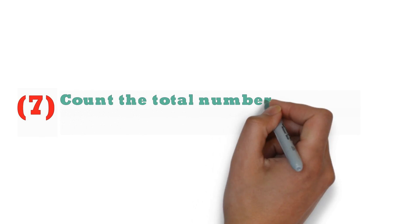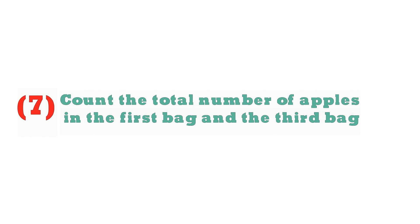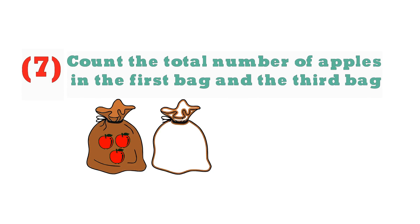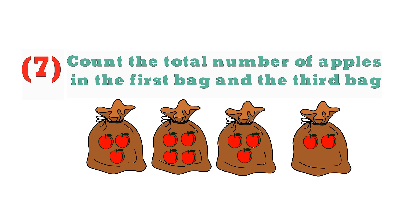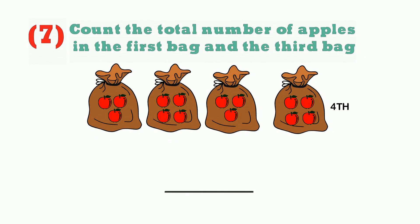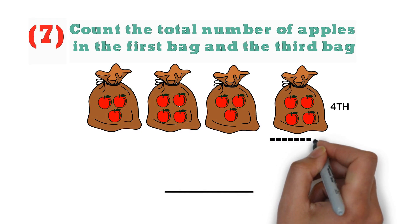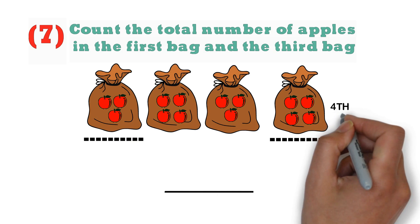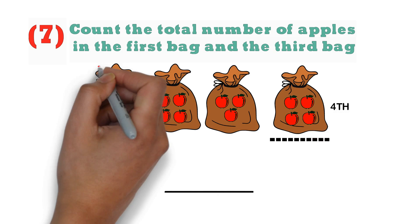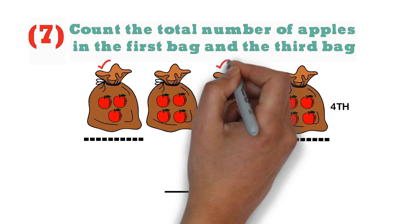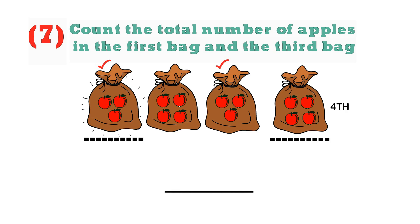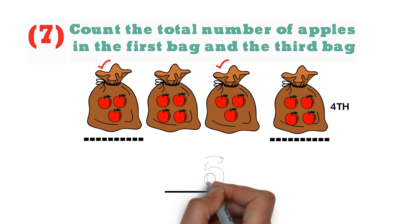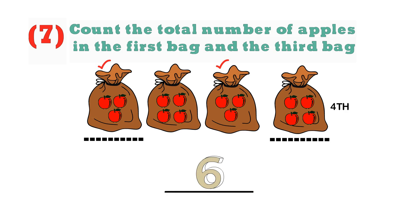So they're telling us: count the total number of apples in the first bag and the third bag. Now some people might get confused about which is the first bag — are they counting from the left or from the right? But when you look closer, we realize the fourth bag is already marked. So the first bag is this one and the third bag is this one. We've got 3, 4, 5, 6 — so we've got 6 apples total in the first and the third bag.